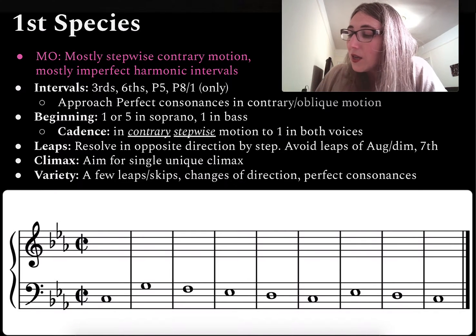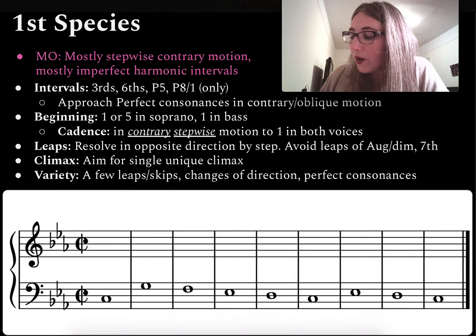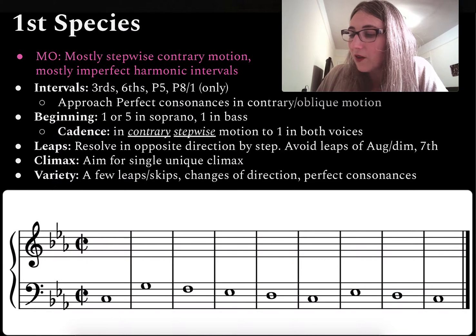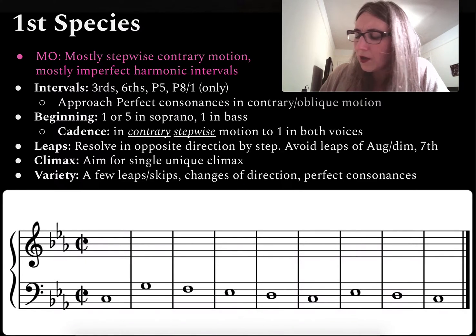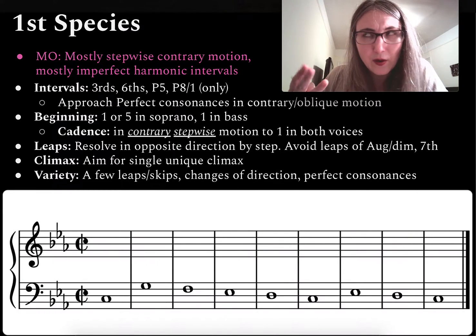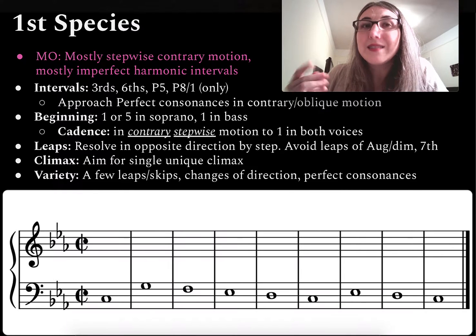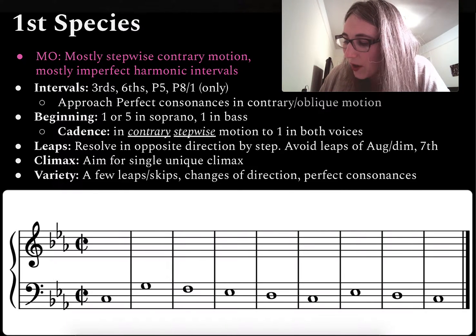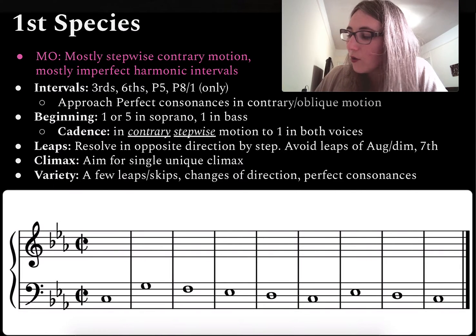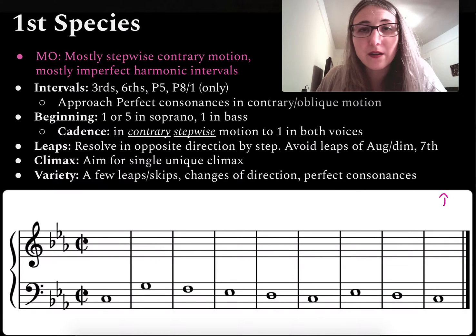Let's do the cadence first. Regardless of whether you're writing a counterpoint above or below a cantus firmus, the last note in both voices is always scale degree one, which means you're always going to end with either an octave or a unison. So I have to figure out what key I'm working in so I can think about scale degrees. I've got a key with three flats — the major key with three flats would be E-flat, and three flats minor would be C minor. Since I begin on C and end on C in the cantus firmus, I'm definitely in the key of C minor.